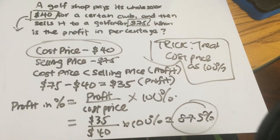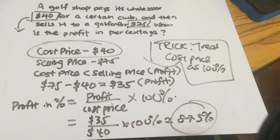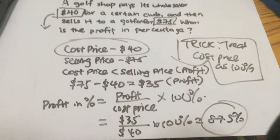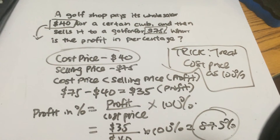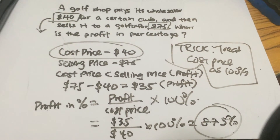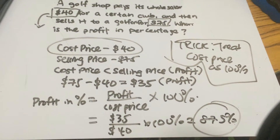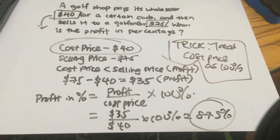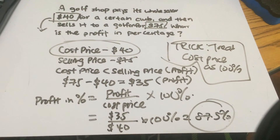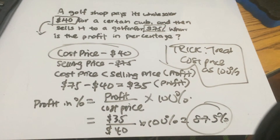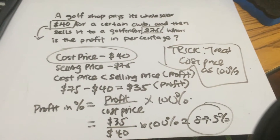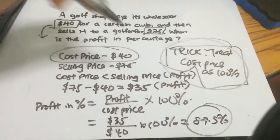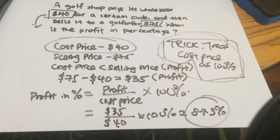So the answer to this question — what is the profit in percentage — is 87.5%. That's it for now, this is the Math Mad channel, I'm Bob signing off. If you have any issues or questions, raise them in the comment section below. And always remember, when approaching cost price and selling price problems, the trick is that cost price is 100%. See you guys!